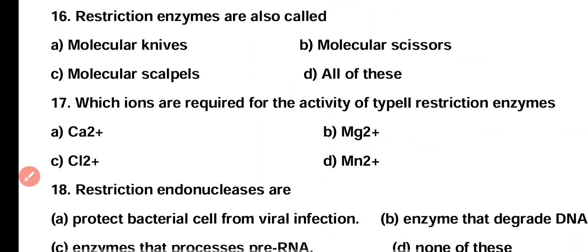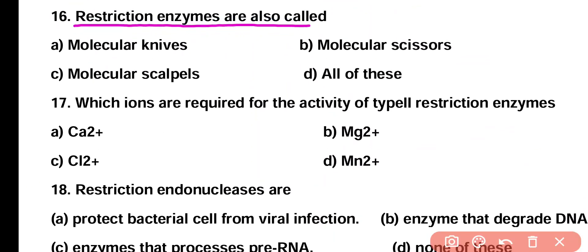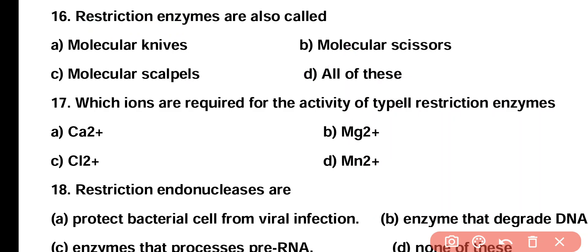Question 16. Restriction enzymes are also called: Option A: molecular knives, Option B: molecular scissors, Option C: molecular scalpels, Option D: all of these. Correct answer is Option D. Restriction enzymes are called molecular knives, molecular scissors, or molecular scalpels, so the correct answer is all of these.